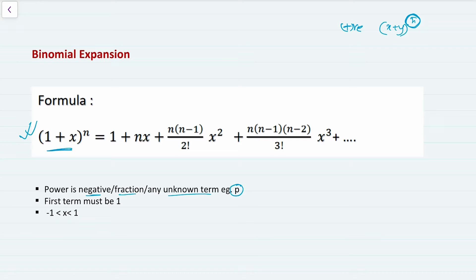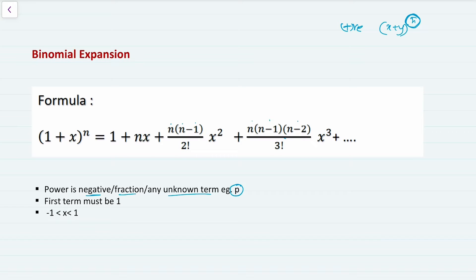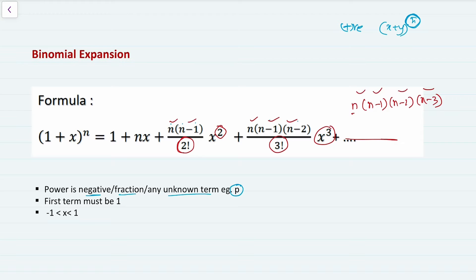The equation here is (1+x)^n, where n is the power, the first term is 1, and the second term is x. The formula is: 1 + nx + [n(n−1)/2!]x² + [n(n−1)(n−2)/3!]x³. To remember it, count the parts: two parts gives 2 factorial with power 2; three parts gives 3 factorial with power 3; the next term would be n(n−1)(n−2)(n−3) divided by 4 factorial with power 4.